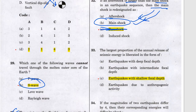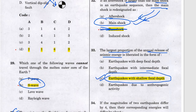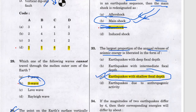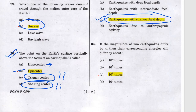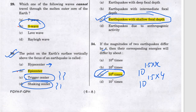Question 33: earthquake with shallow focal depth — answer is c. Question 34 covers the largest proportion of annual release of seismic energy. Remember the energy release formula: energy difference is 10 to the power 1.5 times x, where x is the difference between magnitudes. Here x is 4, so it is 10 to the power 1.5 times 4, giving 10 to the power 6 versus 10 to the power 4 — answer is c.